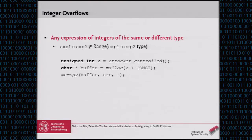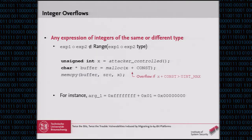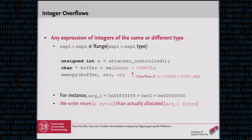Here's our example with a little variation: this time we add a constant value to our attacker-controlled value — think of a plus-one for null-terminating a string. If the result of this addition lies outside the variable's type, we flip over and overflow. In the case where x equals UINT_MAX plus one, we end up allocating zero bytes, and if we use the initial value for the memcpy, we're writing significantly more bytes to a buffer that cannot even hold a single byte.